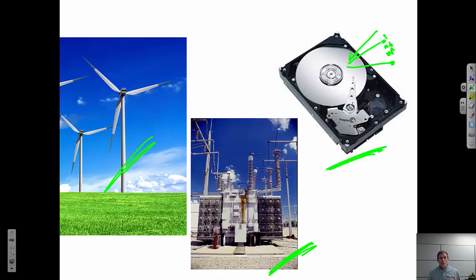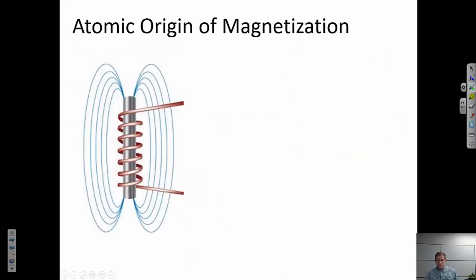The point of this video is to think about where does magnetism come from in materials. We're going to start with the classical picture of taking a metal and wrapping a wire around it. When we do that, if we flow current through the wire, we generate a magnetic field within that loop of wire.